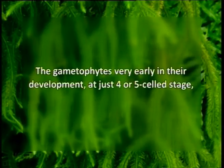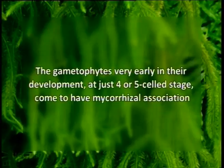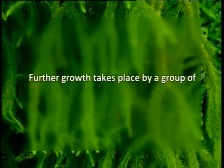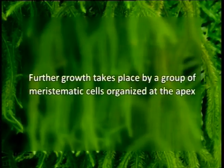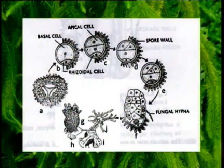The gametophytes very early in development, at just four to five cell stage, come to have a mycorrhizal association. Further growth takes place by a group of meristematic cells organized at the apex. Gametophytes in some species are partly subterranean with a chlorophyllous aerial portion. In some epiphytic species, for example Lycopodium pflaumeria, the prothalli is irregularly fragmented and these fragments form gemmae, which secure vegetative propagation of the gametophytic generation.